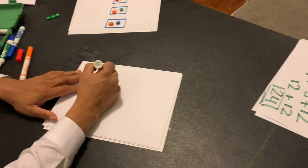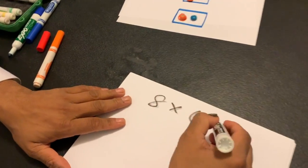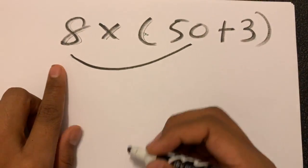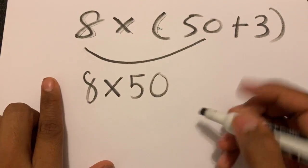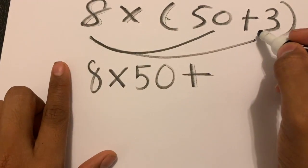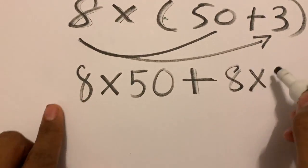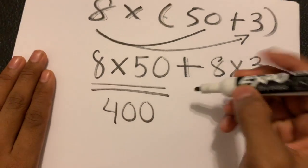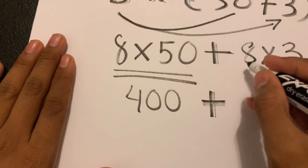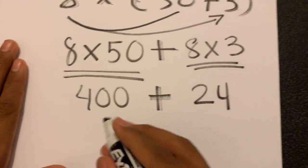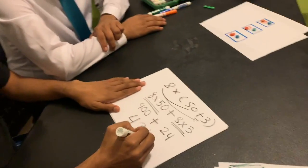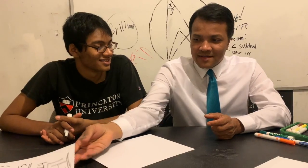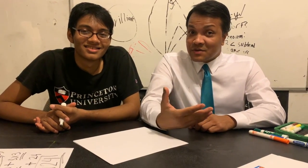Now let's see if you can do it without color coding: eight times open-parenthesis 50 plus three close-parenthesis. First I'll distribute the 8 to the 50 — that's 8 times 50 — plus distribute the 8 to the 3, which is 8 times 3. Eight times 50 is 400, plus 8 times 3 is 24, so 400 plus 24 is 424. Very nice! The student understands — no color coding needed.